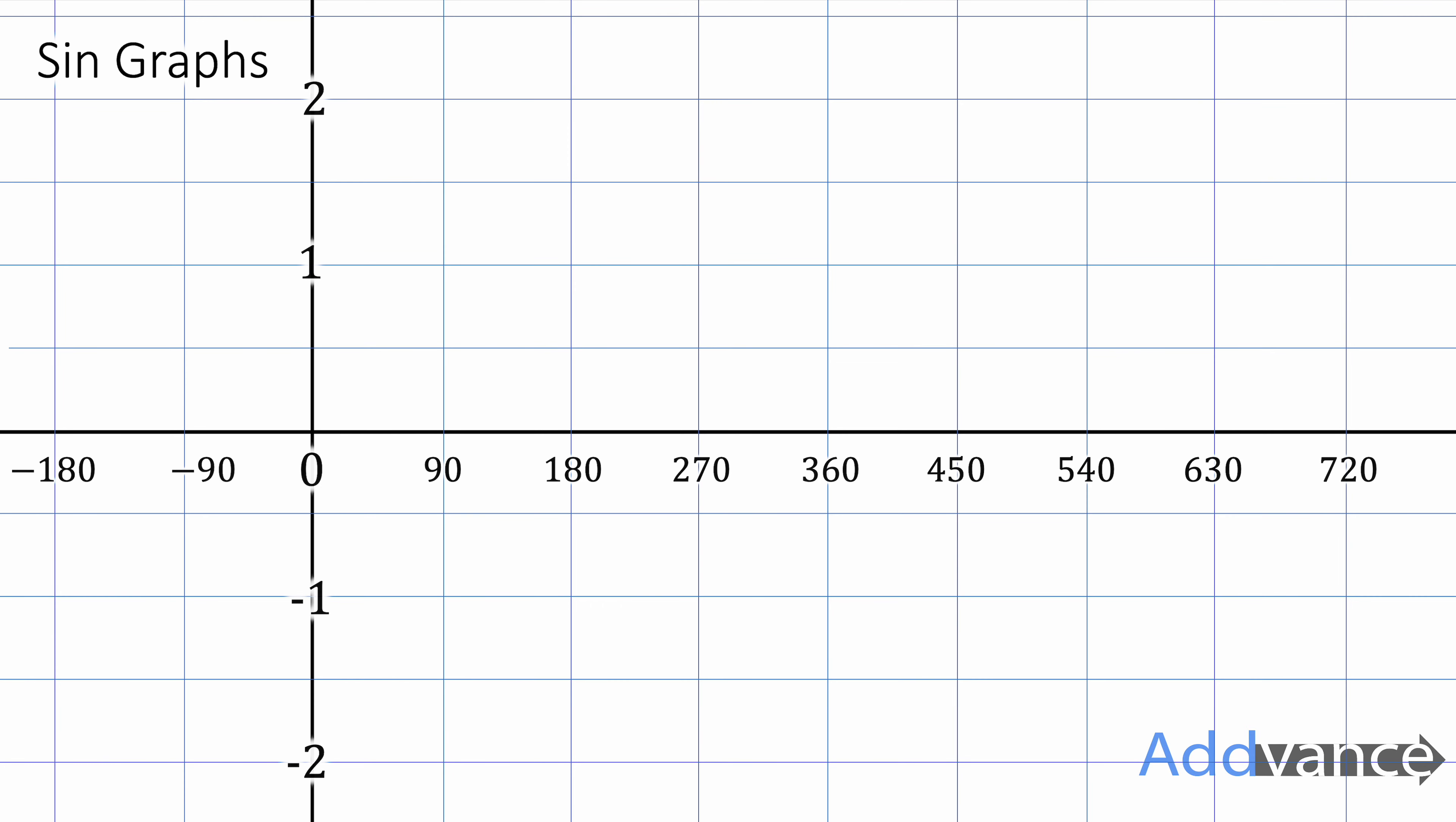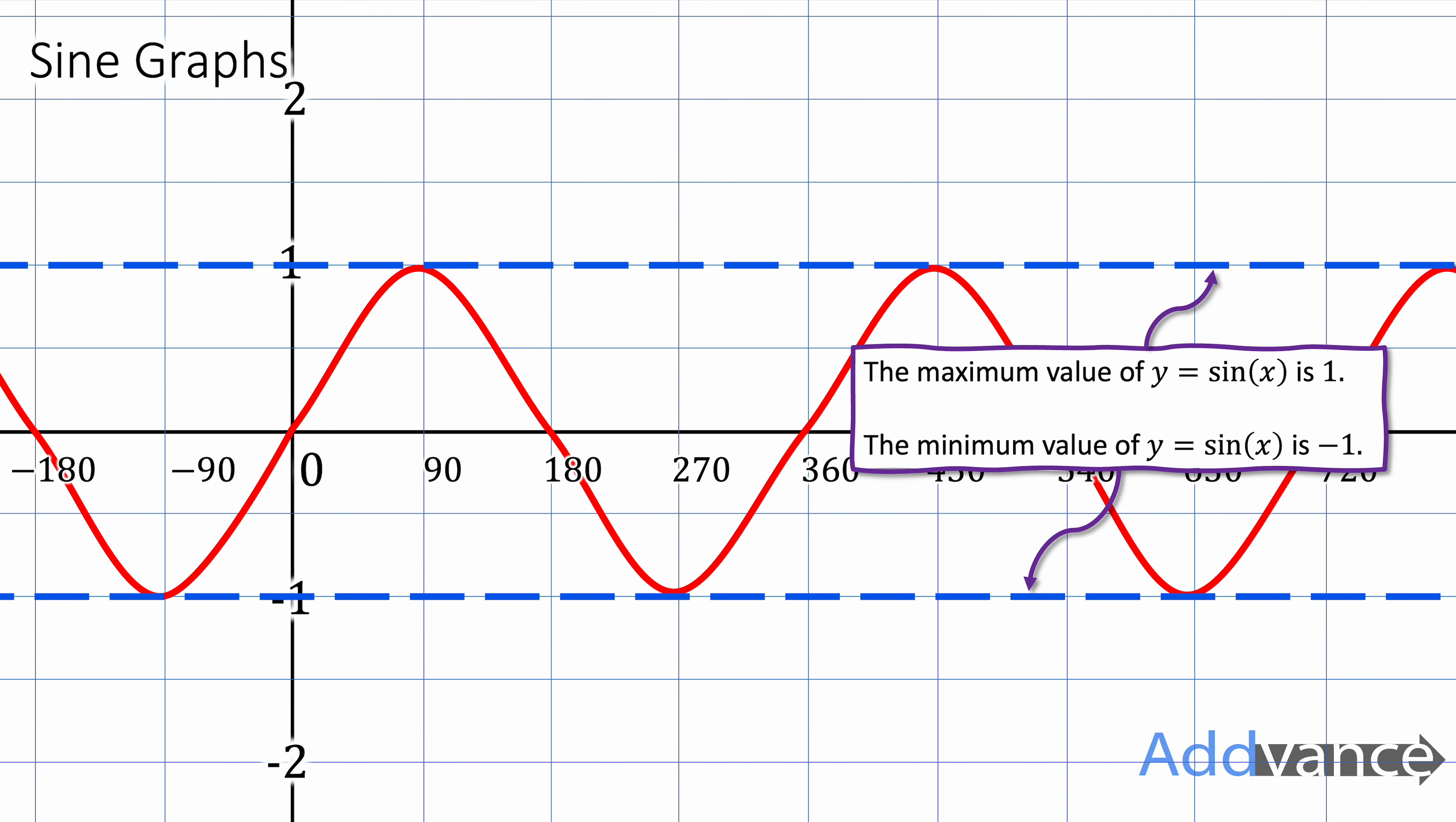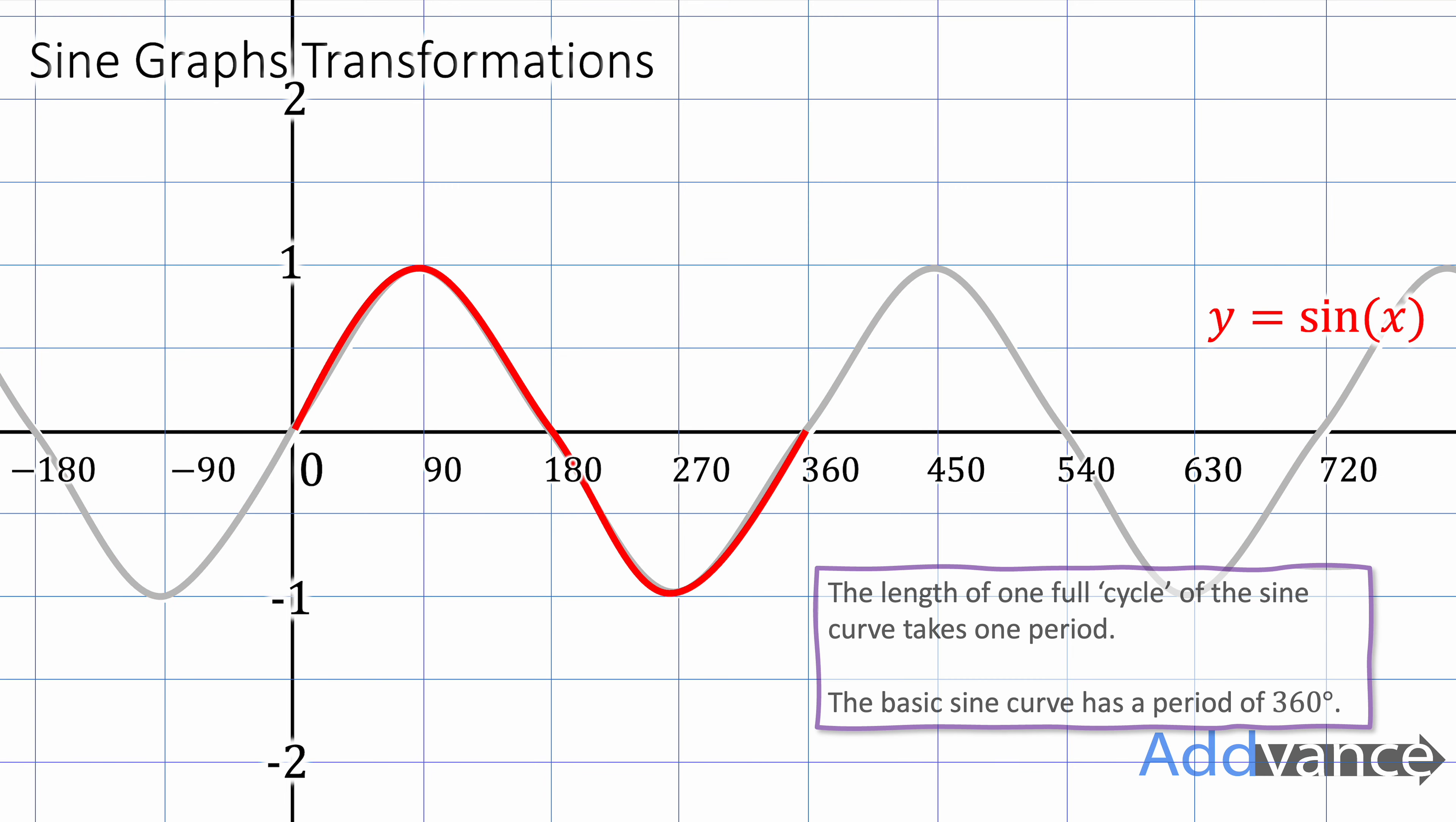Very quickly let's refresh our sine graph. So the sine graph looks like this and it goes between minus 1 and 1. It goes up and down from minus 1 to 1. Minimum value of minus 1, maximum value of 1. It has a period of 360 degrees so one full S shape or one full cycle is 360 degrees and it repeats that exact same pattern on and on forever until infinity.